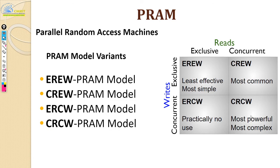Out of all these four, EREW is the most conservative one and it is going to give you the worst case estimate. If you develop a parallel algorithm assuming it runs on EREW architecture, it is going to be the worst parallel algorithm ever — that is the worst case. On the other hand, when you assume a CRCW model, whatever algorithm you develop assuming CRCW is going to be the best parallel algorithm on that machine. Practically speaking, it is going to be somewhere in between because of all the overheads. The idea of these PRAMs is that you get the lower and upper bound for a parallel algorithm that you develop.